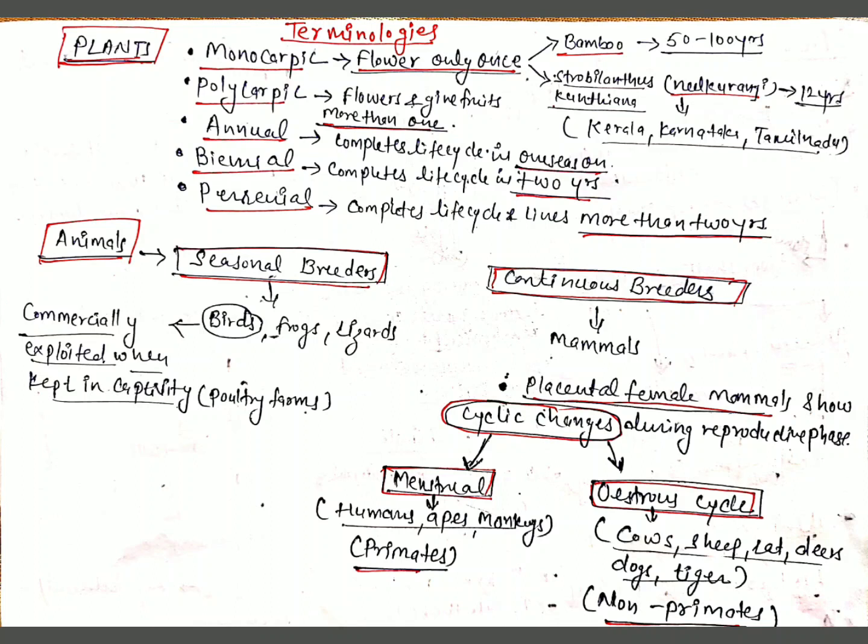Placental female mammals show cyclic changes during their reproductive phase in the activities of the ovaries, accessory ducts, and hormones. These cyclic changes are known as the menstrual cycle in primates like monkeys, apes, and humans, and as the estrous cycle in non-primates like cows, sheep, rats, deer, dogs, and tigers.